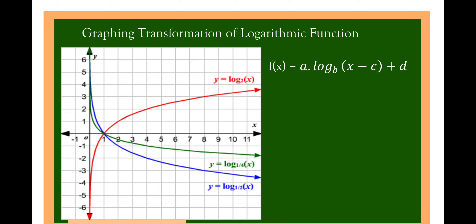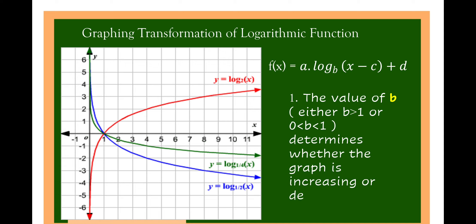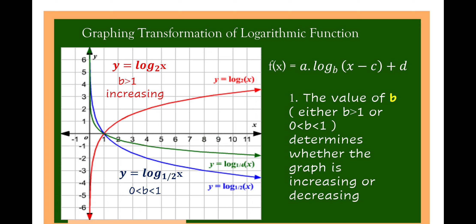The graphing transformation of a logarithmic function is in the form f(x) is equal to a times log of x minus c plus d to the base of b. The value of b — either b is greater than 1, or b is less than 1 but greater than 0 — determines whether the graph is increasing or decreasing. In y is equal to log of x to the base of 2, the base b is 2, which is greater than 1, so the graph is increasing. In y is equal to log of x to the base of 1/2, where b is 1/2, which is less than 1 but greater than 0, the graph is decreasing.